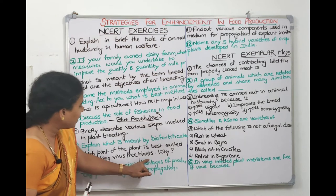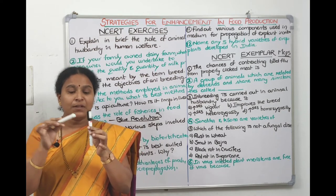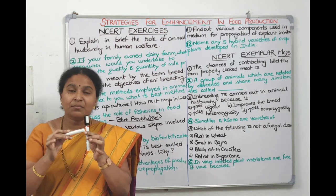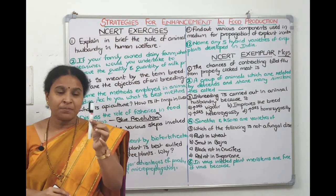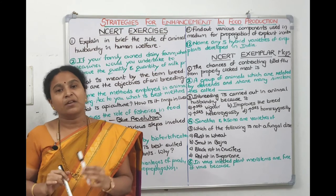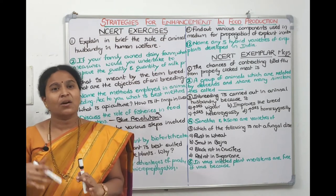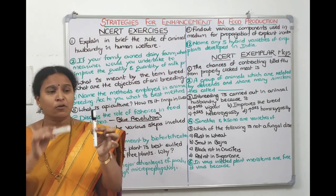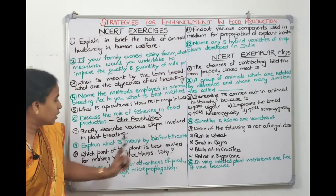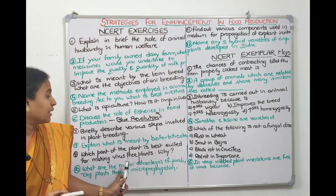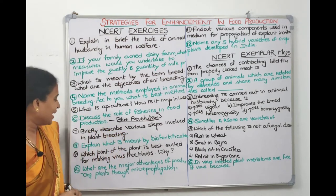The ninth question: which part of the plant is best suited for making virus-free plants, and why? The tip of the plant contains the apical meristem; at the axis of the leaf is the axillary meristem. These meristematic cells are best for tissue culture or micropropagation. Even if the whole plant is infected with a virus, meristematic cells are not infected because they multiply at such a fast rate that viruses cannot enter. From a completely virus-infected plant, meristematic cells can be picked to recover virus-free plants.